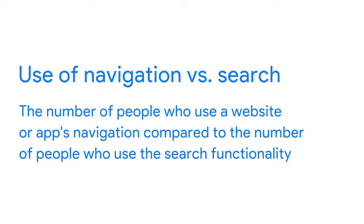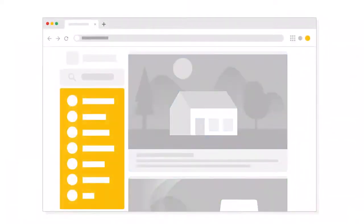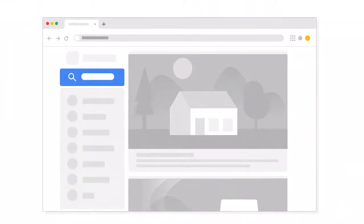Next, we have use of navigation versus search. This KPI indicates the number of people who use a website or app's navigation compared to the number who use the search functionality. Think about when you visit a website — do you use the navigation bar or go straight to the search bar? There's no right answer. Ideally, you want to make it as easy as possible for people to navigate the site. But if this KPI indicates that people use one navigation method way more than the other, you might want to adjust your design.